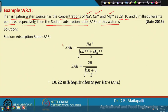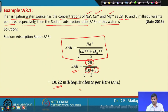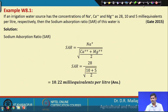The SAR equation is: SAR equals sodium-plus divided by the square root of (calcium-plus magnesium) divided by 2. The values are: sodium = 28, calcium = 10, and magnesium = 5 milliequivalents per litre. Putting all values in, the SAR value equals 10.22 milliequivalents per litre. Remember this formula — you can directly substitute the values and get the answer.